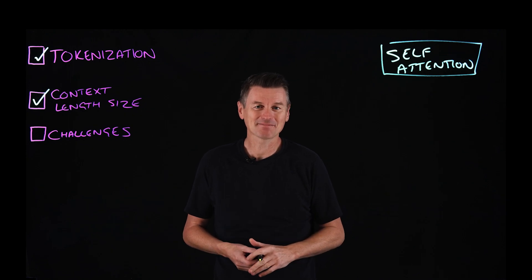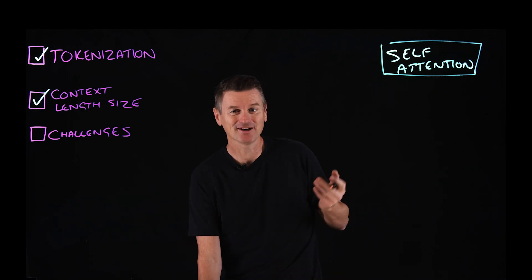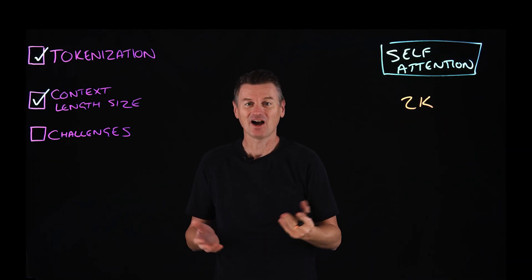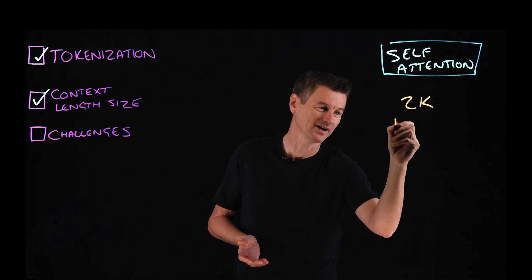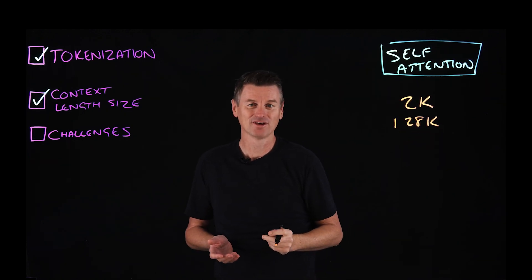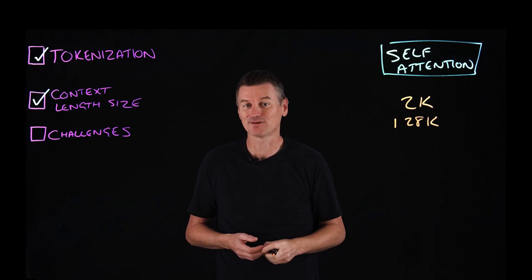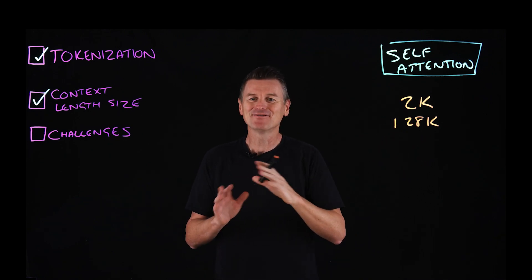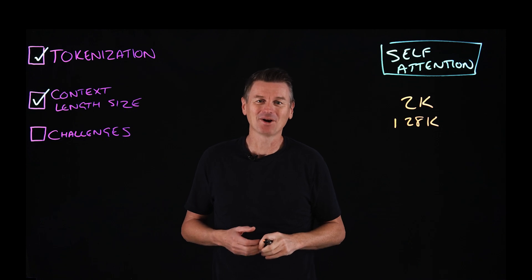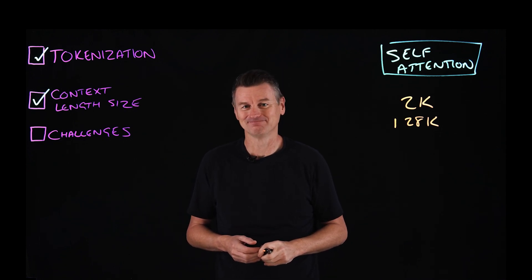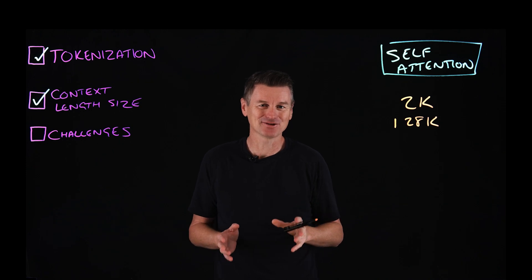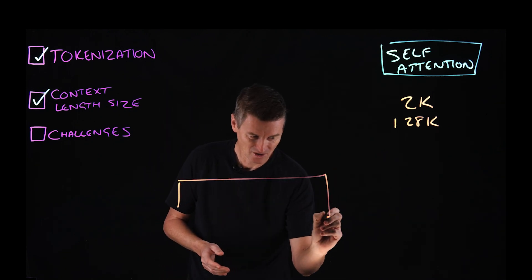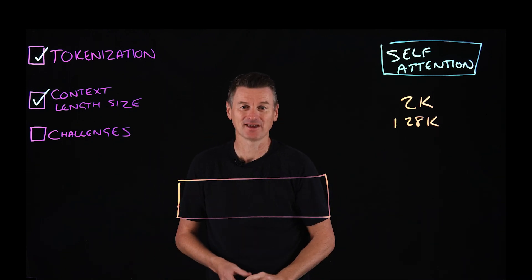Context window size has been rapidly increasing. The first LLMs I used had context windows of around 2,000 tokens. The IBM Granite 3 model today has a context window of 128,000 tokens, and other models have larger context windows still. That almost seems like overkill — I would have to be conversing with a chatbot all day to fill a 128k token window. Well, actually that's not necessarily true, because there can be a lot of things taking up space within a model's context window.